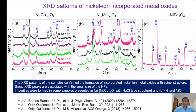First, we look at the nickel cobaltite phase where the nickel-to-cobalt ratio is 1:4 — very low nickel content. We got peaks corresponding to the nickel cobalt oxide spinel phase — a pure phase. But the peaks are very broad, which indicates that the particle size is small.